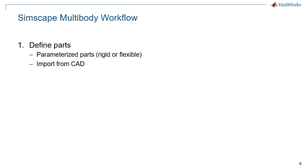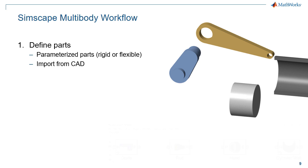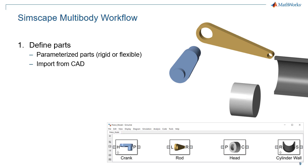You can define parameterized parts in Simscape Multibody. These parts can be rigid or flexible, and you can import individual parts or entire assemblies from CAD.